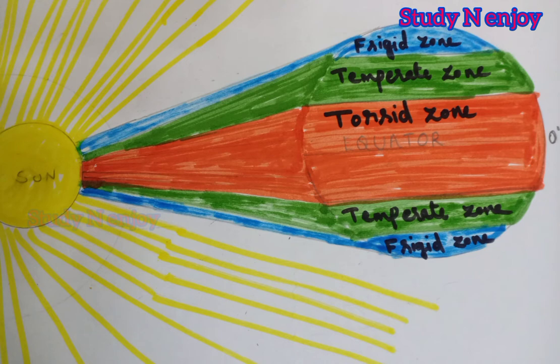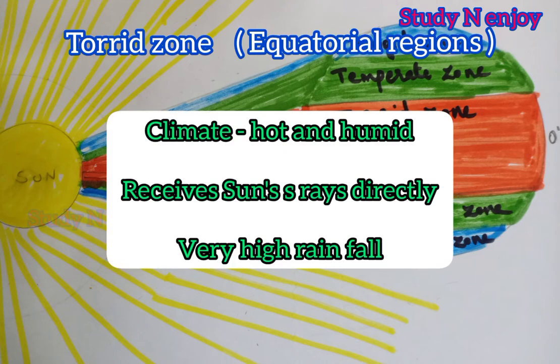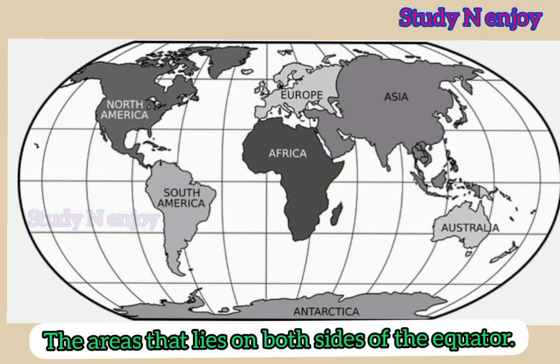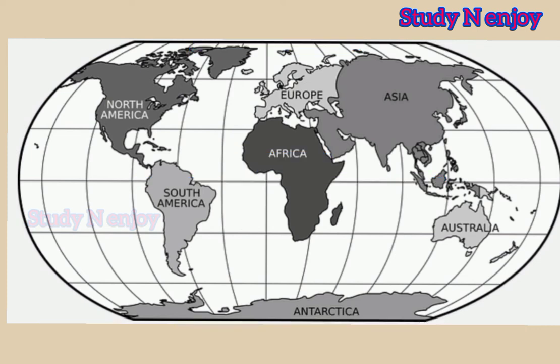The torrid zone is very hot and humid as it receives the sun's rays directly. Some areas in this zone receive very high rainfall. This climatic area is also known as the equatorial region. The areas that lie on both sides of the equator are known as the equatorial region, which is also known as the torrid zone. To study more about the peculiarities of this region, we can look at which countries are included in the equatorial region.